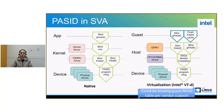Let's see the PASID usage in shared virtual addressing. The diagram on the left shows the steps to set up SVA usage in native. The application will issue a bind process request which goes into the device driver and then flows into the IOMMU driver. IOMMU driver will allocate a PASID and bind the PASID with the CPU page table of the current process by creating a PASID entry in the PASID table. Then the PASID is programmed to the hardware device.